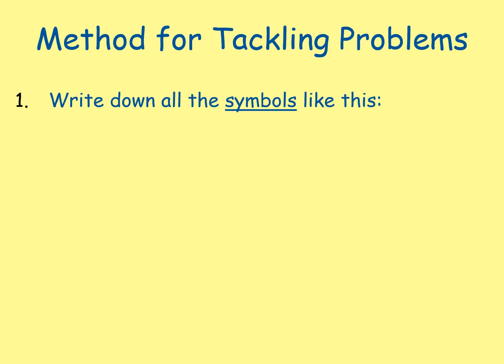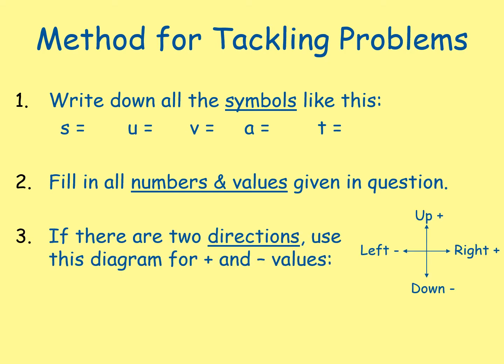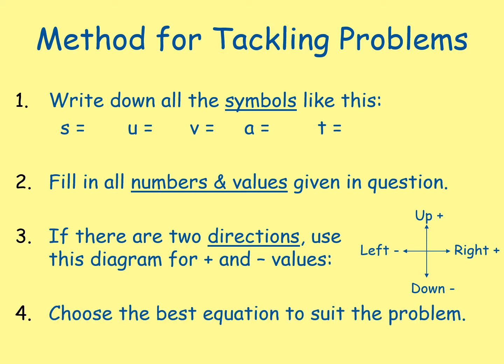Method for tackling problems: 1. Write down all of the symbols s, u, v, a, and t. 2. Fill in all of the numbers and values you are given in the question. 3. If there are two directions, use this diagram for positive and negative values — if your object is moving up or to the right, let it be positive; if it is moving left or down, let it be negative. 4. Choose the best equation to suit the problem.